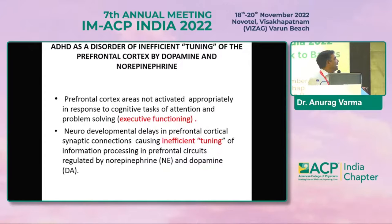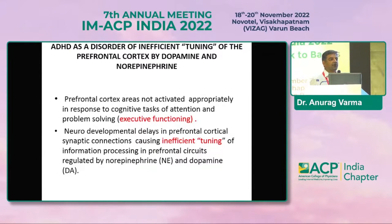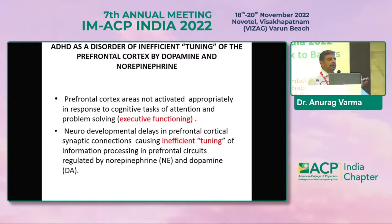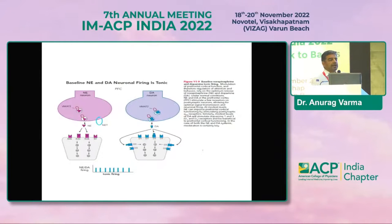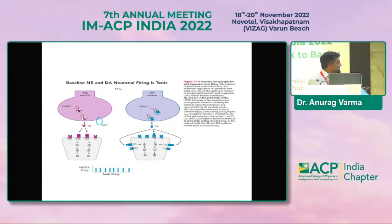The executive functioning and the inefficient tuning of information processing in the prefrontal cortex — the principal neurotransmitters involved are norepinephrine and dopamine. There are other neurotransmitters also now being seen to be implicated, especially the reticular activating system, but principally norepinephrine and dopamine are the circuits primarily responsible for ADHD. There is a tonic firing in the prefrontal cortex of both dopamine and norepinephrine.